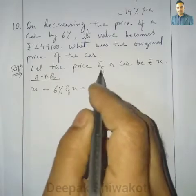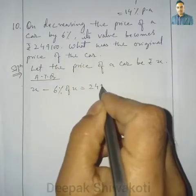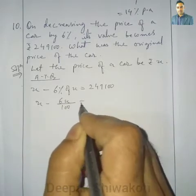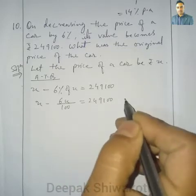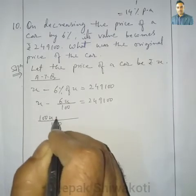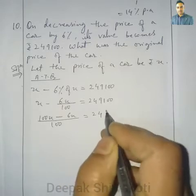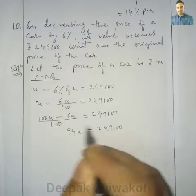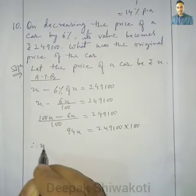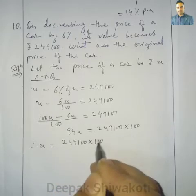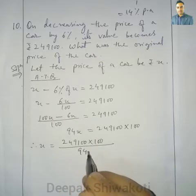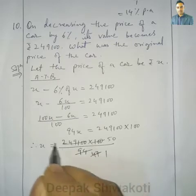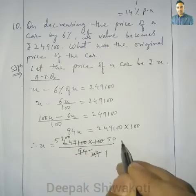It becomes 2,49,100. So: x minus 6x by 100 equals 2,49,100. Taking LCM as 100: 100x minus 6x equals 2,49,100 into 100, giving 94x equals 2,49,100 into 100. Therefore x equals 2,49,100 into 100 by 94. Dividing by 2 gives 47, and dividing further by 47 gives 5300. So 5300 into 50 equals rupees 2,65,000. This was the original price of the car.